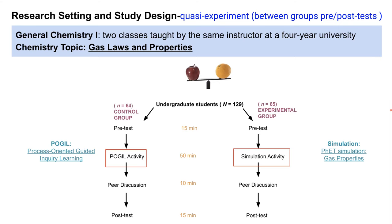We followed the same teaching pattern for both classes. First, we administered a pretest to assess students' prior knowledge before implementing the activities. During the 75-minute lecture, students completed the activity individually, then we paired students up for peer discussion. After that, we gave students a posttest — the same as the pretest — to see how the activity made a difference for student learning on this topic.